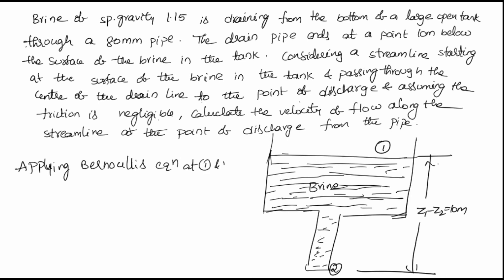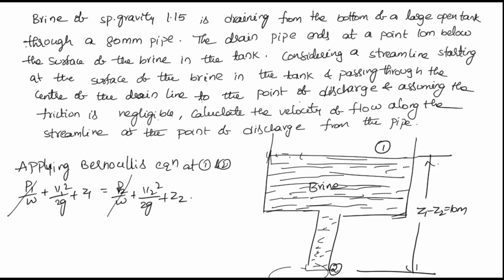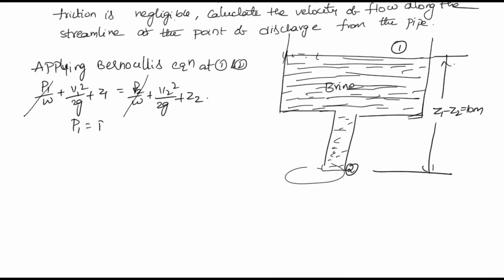Applying Bernoulli's equation at sections 1 and 2: p1/w + v1²/2g + z1 = p2/w + v2²/2g + z2. Here p1 and p2 are both atmospheric pressure, so there is no pressure difference and we can cancel these two terms. So p1 = p2 = atmospheric pressure.